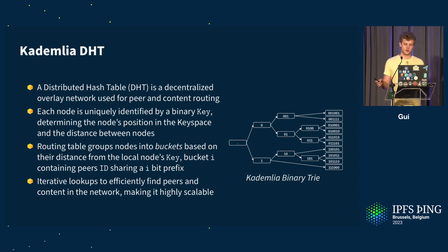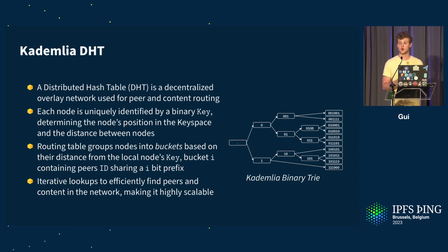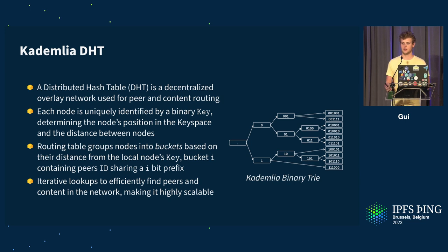It's important for each node to have a unique identifier in this key space in order to determine the node's location inside the key space, and to compute the distance between nodes, or between any two keys. The distance mechanism used is the XOR distance, which is very interesting.